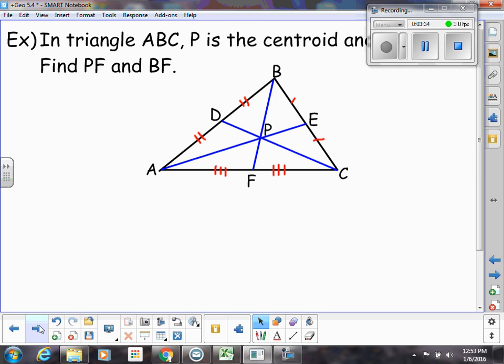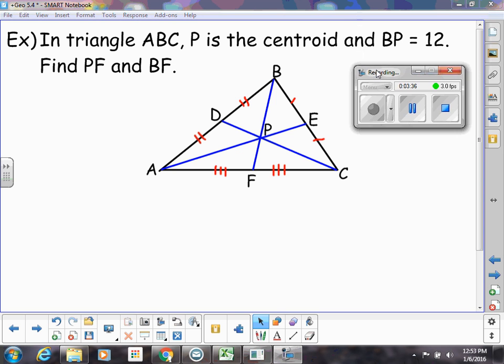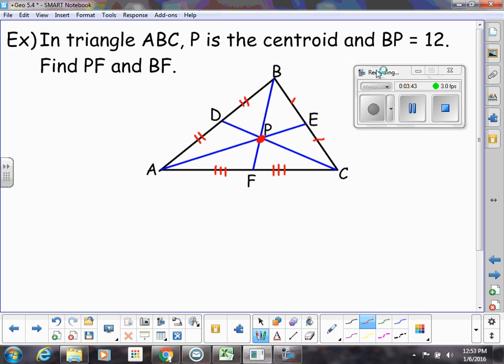So in this example, we have a triangle ABC, and P is the centroid. And they're telling us that BP is 12. So this distance is 12. They want us to find PF and BF. So this little piece, and then the whole thing. There are lots of ways to do this. But it's easiest for me if I think of the whole segment split into thirds. They're telling us that two of those thirds is 12. So what does that mean each of those thirds are?